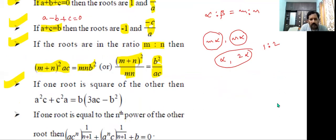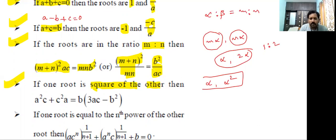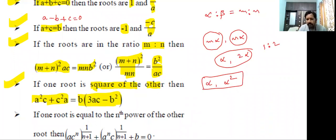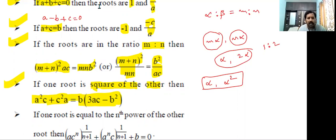If one root is the square of the other, meaning the roots are alpha and alpha², the shortcut formula is: a²c + c²a = b(3ac - b²). Here a is the coefficient of x², b is the coefficient of x, and c is the constant term. This formula gives the relation between the coefficients when one root is the square of the other.